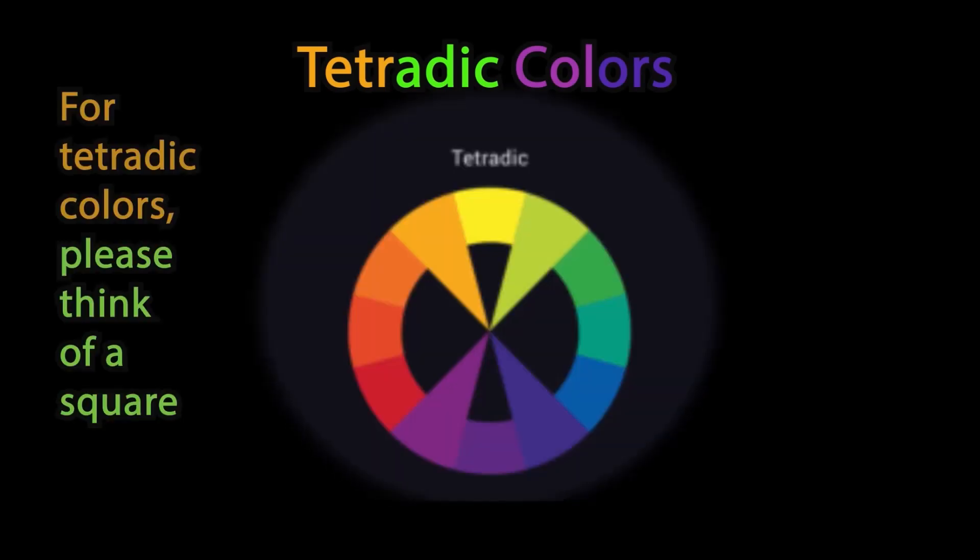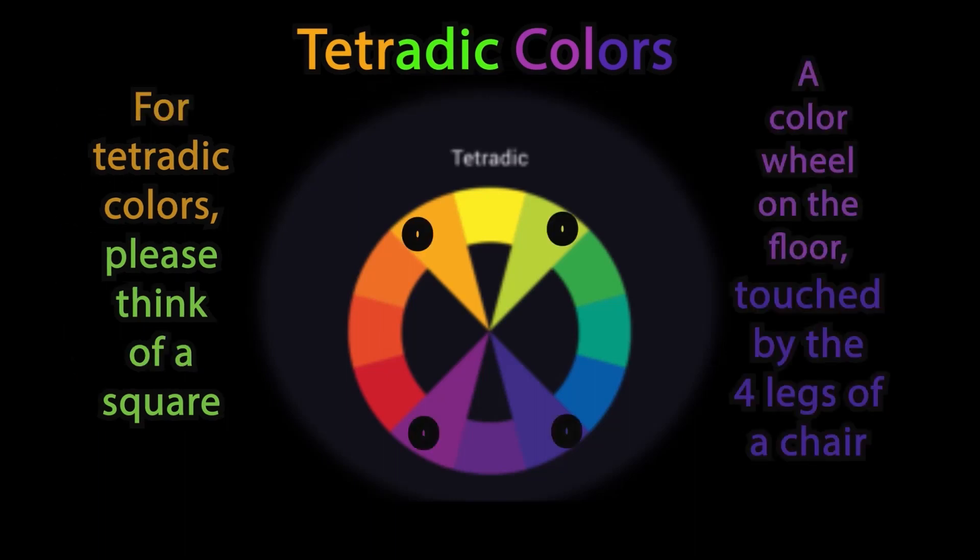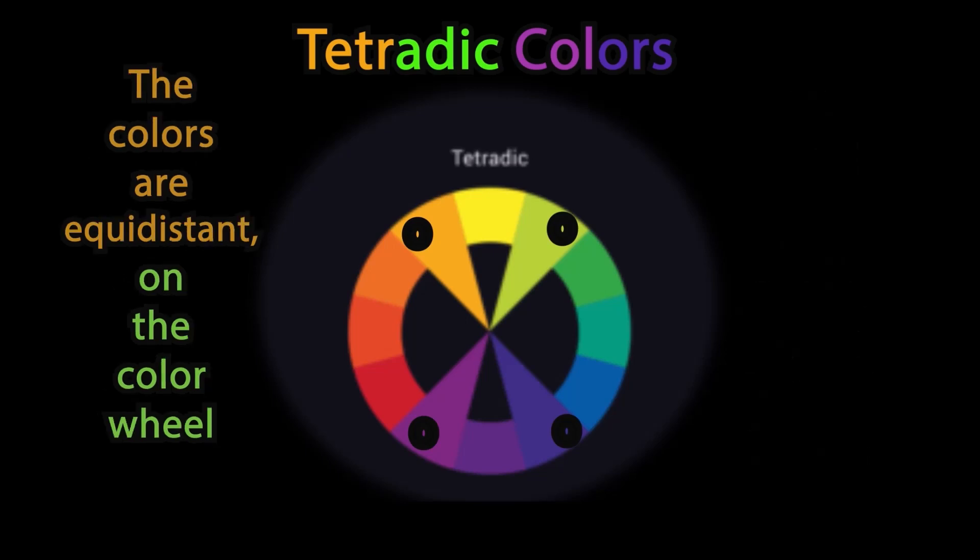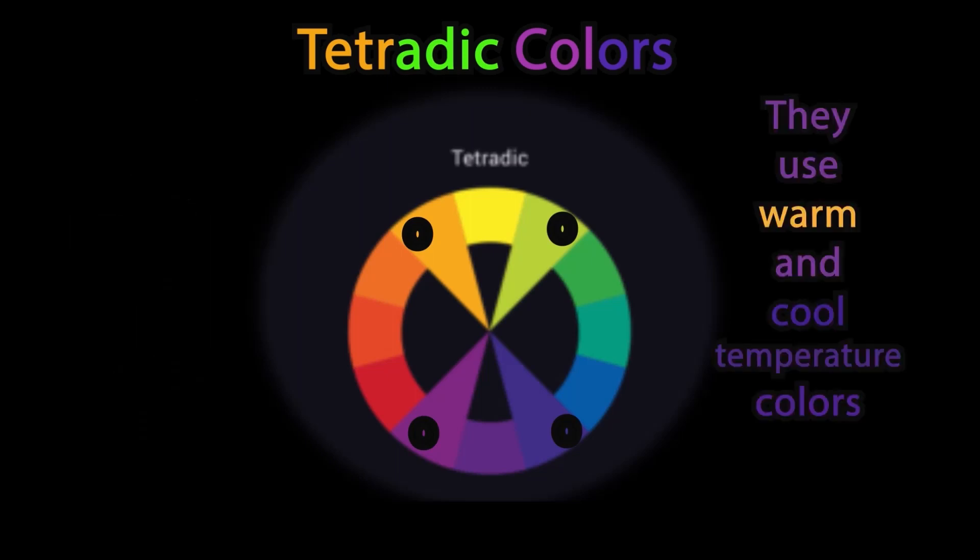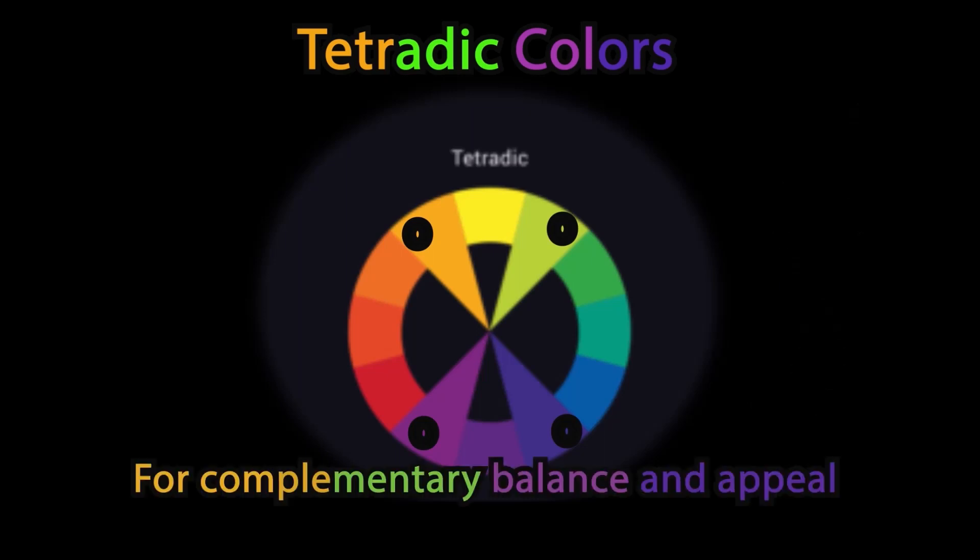Tetradic colors. For tetradic colors, please think of a square. A color wheel on the floor touched by the four legs of a chair. The colors are equidistant on the color wheel. They use warm and cool temperature colors for complementary balance and appeal.